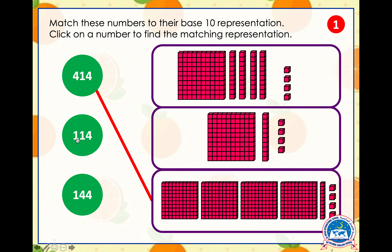One hundred and fourteen is matched to this picture over here — excellent! Why? Because this always has one ten and here we only need one ten. And the last one, one hundred and forty-four, matches with the first block because here we have one hundred, then ten, twenty, thirty, forty — forty-one, forty-two, forty-three, and forty-four — so we have one hundred and forty-four.